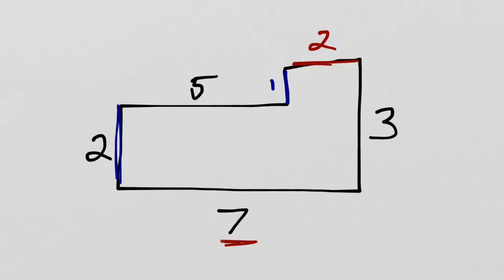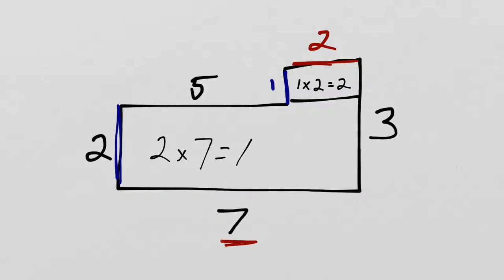I'm going to break it here, giving me a big long rectangle and a little one. The top rectangle has side lengths 1 and 2, so 1 times 2 equals 2. The bottom rectangle: it would be tempting to say the side length is 3, but no — that 3 goes from top all the way up. We're looking at just this rectangle, so the side lengths are in fact 2 and 7, giving 2 times 7 equals 14. The total area equals 14 plus 2 equals 16.